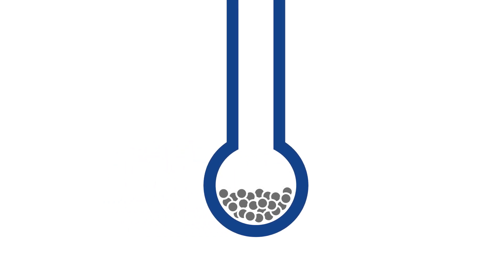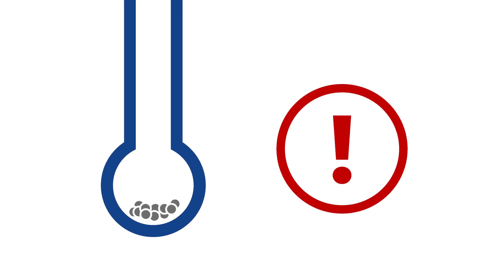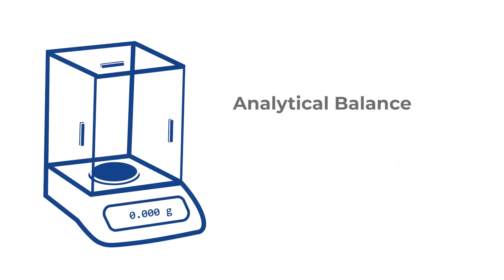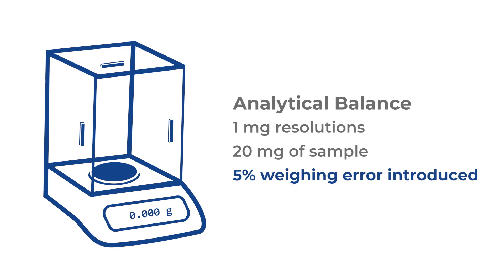What's the minimum mass of sample that can be used for an analysis? If the mass of sample size is too small, then it will be more susceptible to weighing errors. For example, there is an analytical balance with one milligram resolution and 20 milligrams of sample is being weighed on it. A 5% weighing error is already being introduced, so the balance resolution should be tailored properly to the sample mass.